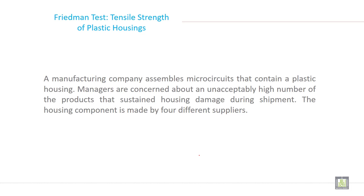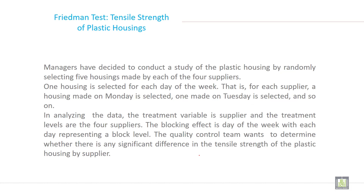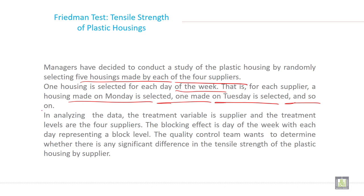Let's understand with an example. A manufacturing company assembles micro circuits that contain a plastic housing. Managers are concerned about an unacceptably high number of products that sustained housing damage during shipment. The housing component is made by four different suppliers. Managers randomly selected five housings made by each of the four suppliers, with one housing selected for each day of the week — Monday, Tuesday, and so on.